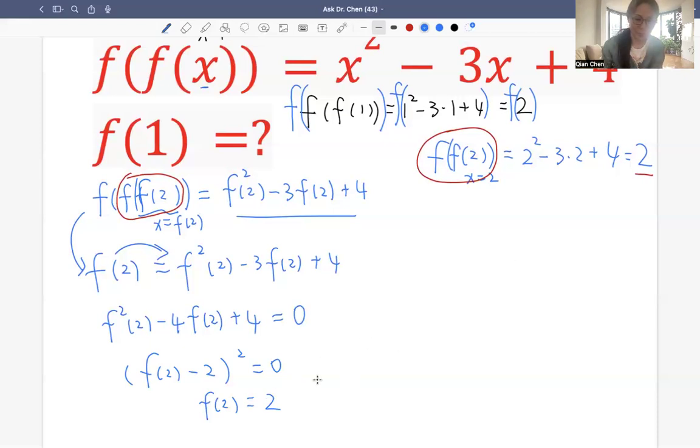Right? So 2 is a key number for this question. So f of 2 equals 2. Now we can go back to the f of 1, right? So remember we have f of, from here, f of 1 equals to 2. Right? So this gives us, so this side, this side gives us f of 1 squared from this, right? From taking this, think about this, x of x. So x equals to f of 1.